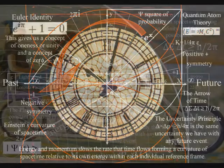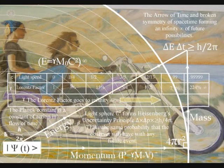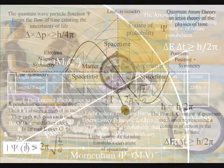In this theory, energy, space and time are all linked together within one universal process and the thing that links them together is the light photon.